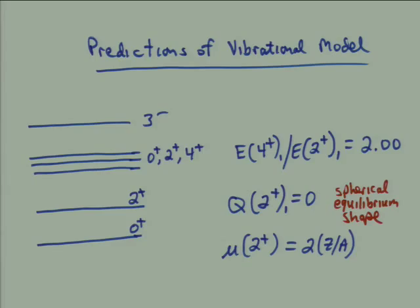Very qualitatively, in a vibrational nucleus we expect a two-plus excited state, and then a triplet of zero-plus, two-plus, and four-plus states at roughly twice the energy of the first two-plus. The other kind of phonon is the octupole phonon, which carries three units of angular momentum and negative parity, giving a three-minus state somewhere around the zero, two, four triplet. This is qualitatively the kind of energy spectrum we'd like you to be able to identify as vibrational.